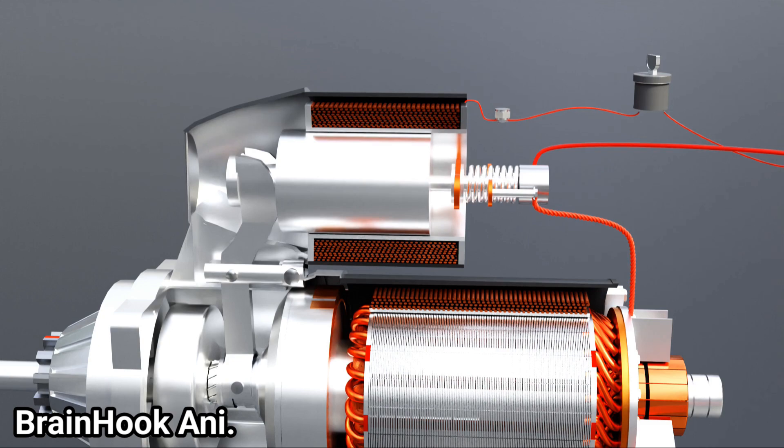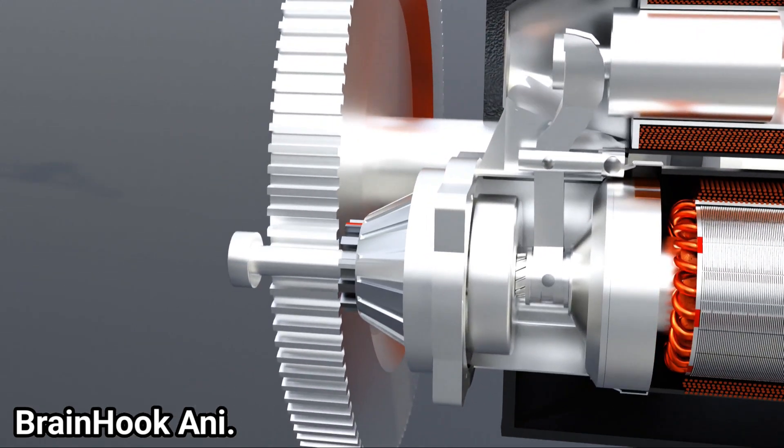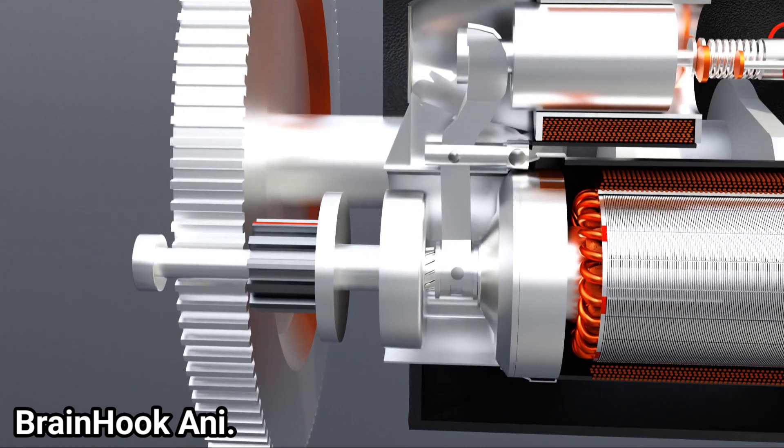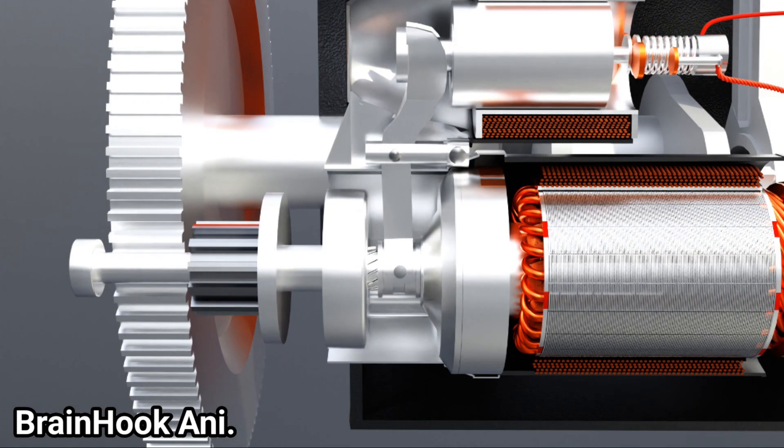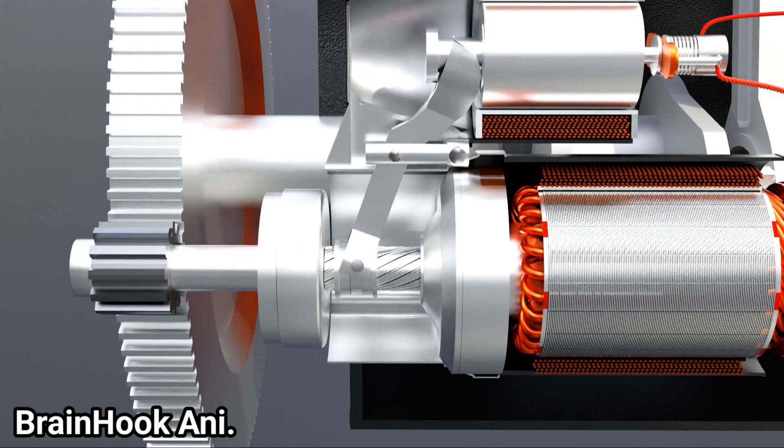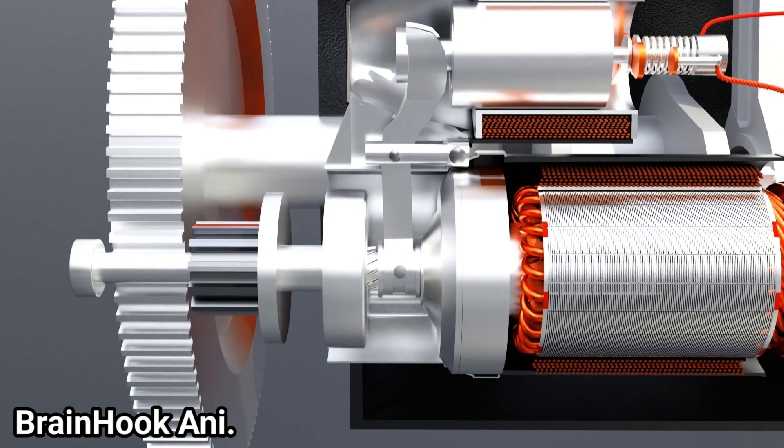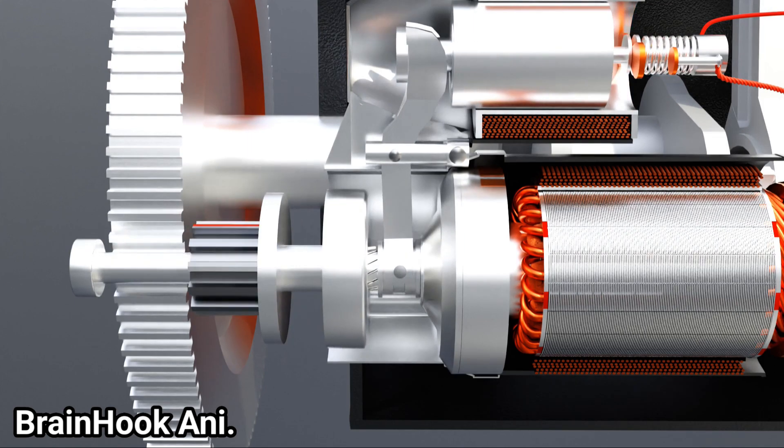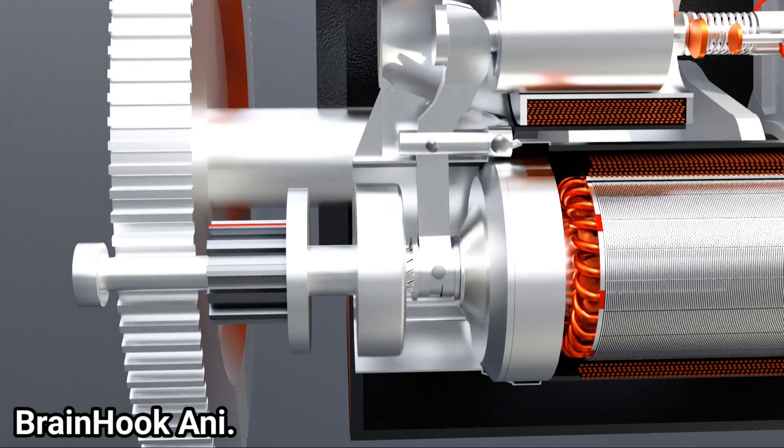Also, another important function of the solenoid is to help the pinion slide and engage the pinion with the flywheel before the motor is started. As the pinion slides toward the flywheel, it rotates slightly on its own axis, as you can see. This rotation is achieved using helical splines, which helps the pinion mesh with the flywheel more conveniently.